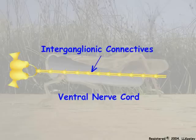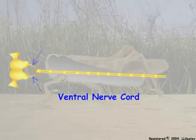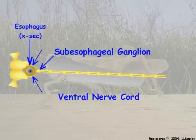The brain is connected to the ventral nerve cord by a pair of nerves that pass around the esophagus and connect to the subesophageal ganglion.